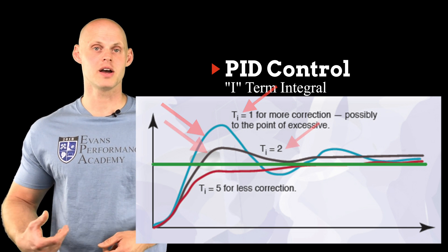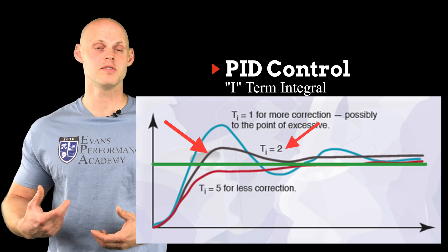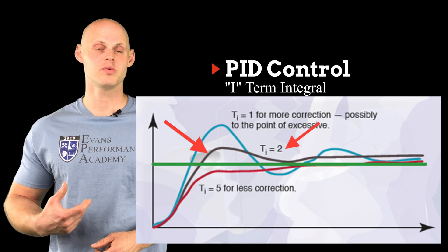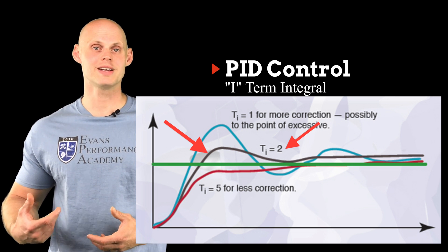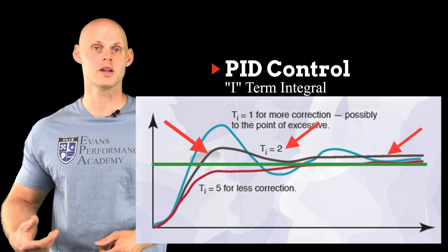So next, we see the brown line here, and that's going to be with our I term a little bit higher. And we can see that we have some overshoot, but we start tracking down. We start getting it to come down to the target level that we want.